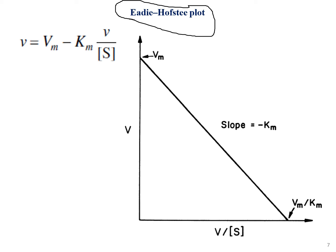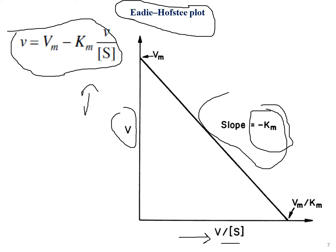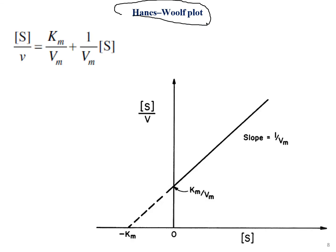The second model is the Eadie-Hofstee plot, represented as: V = Vm − Km(V/S). This is not a reciprocal plot. Here the y-axis is V (velocity) and the x-axis is V/S. The slope is −Km and the y-intercept is Vm.